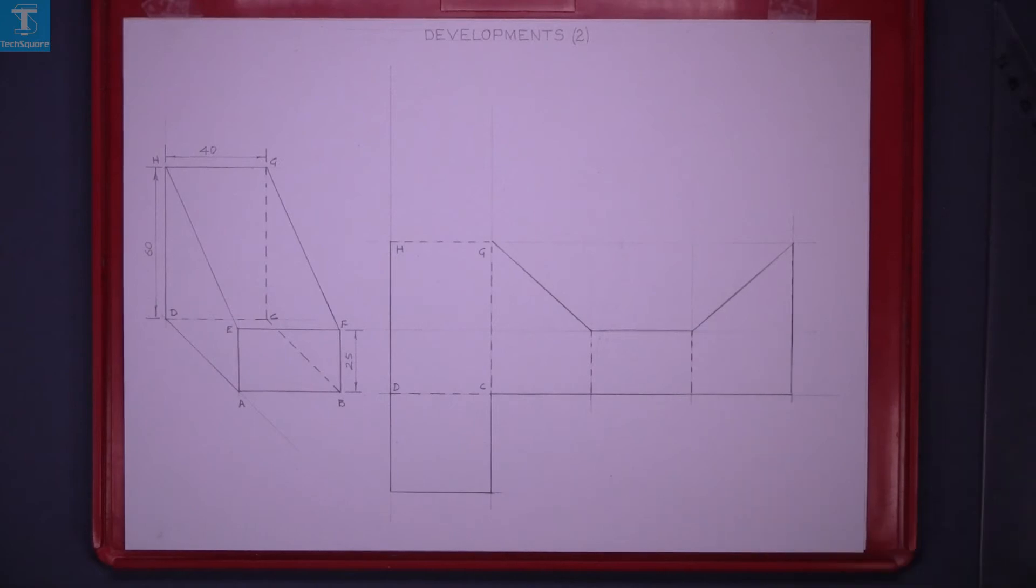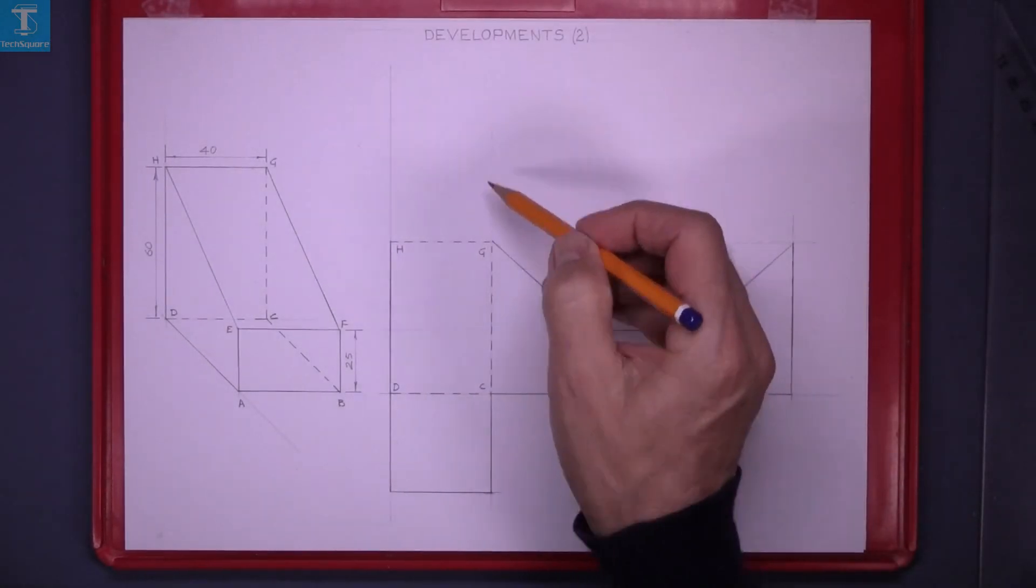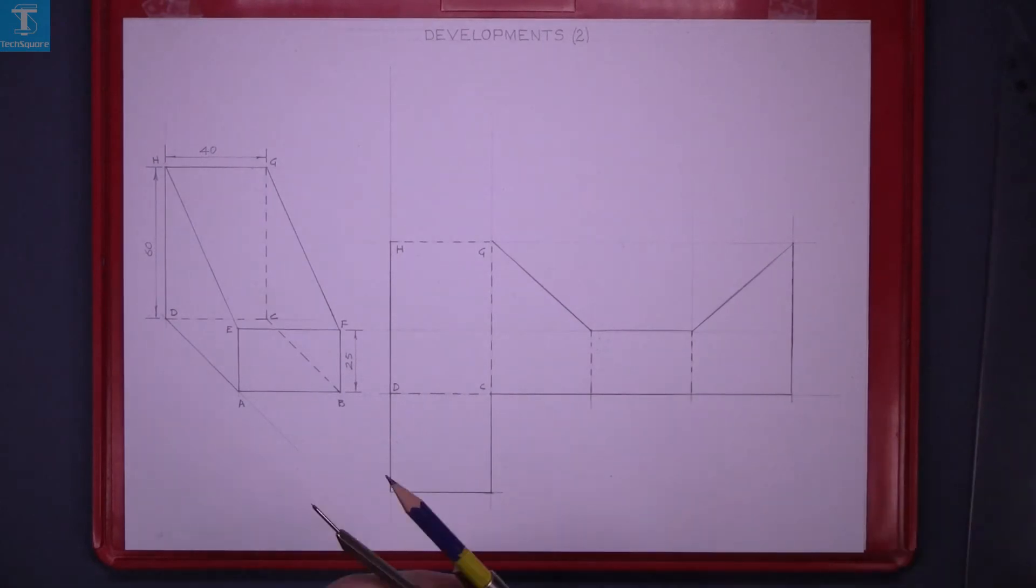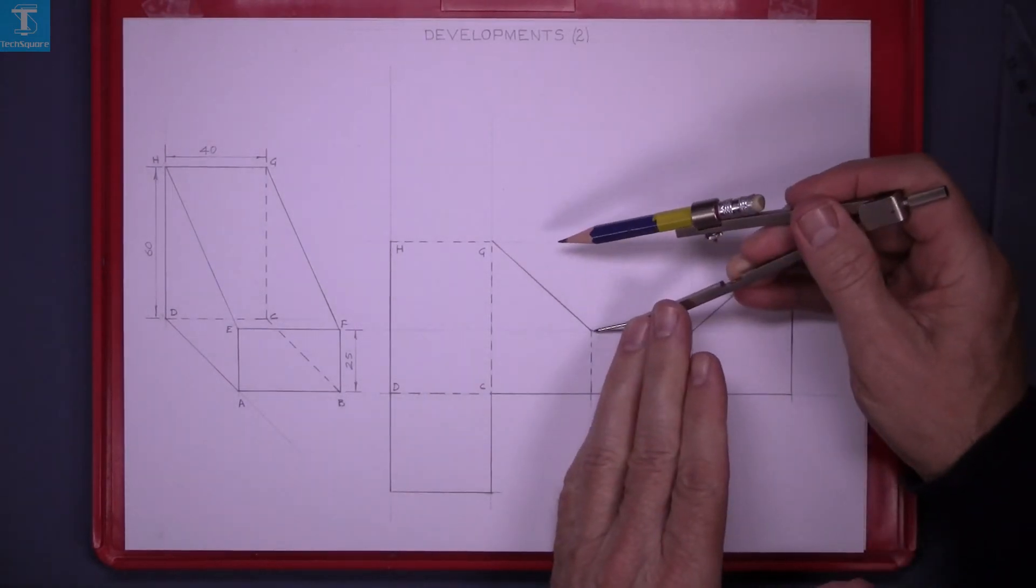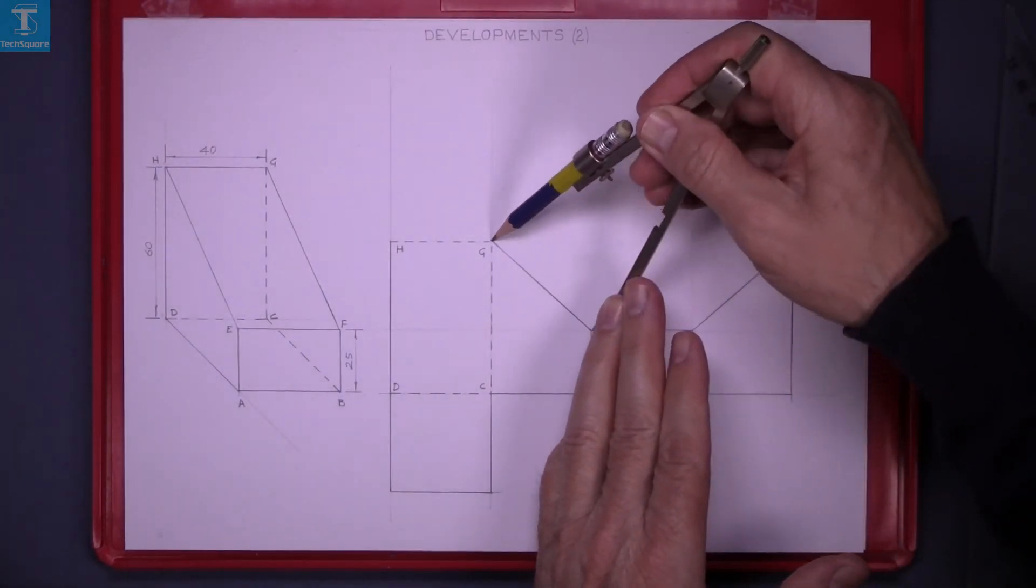Now the next thing is to get the top surface. Set the compass to the length of this sloping side and mark it up above.